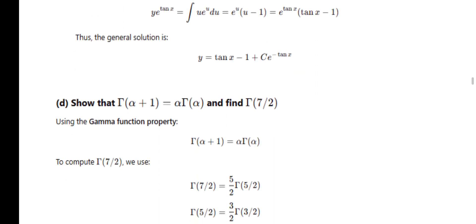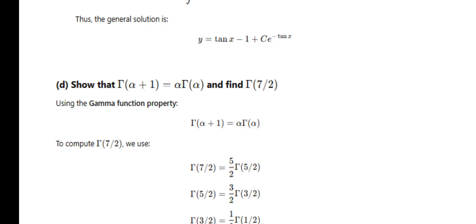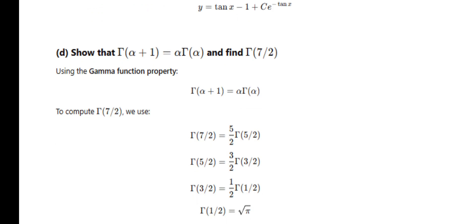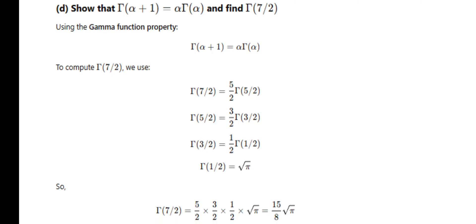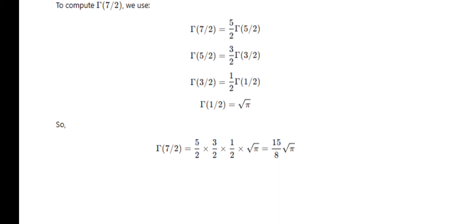Show that Γ(α+1) = α·Γ(α) and find Γ(7/2). Just find Γ(7/2): Γ(7/2) = (5/2)·Γ(5/2) = (5/2)·(3/2)·Γ(3/2) = (5/2)·(3/2)·(1/2)·Γ(1/2). Since Γ(1/2) = √π, we get Γ(7/2) = (15/8)√π.